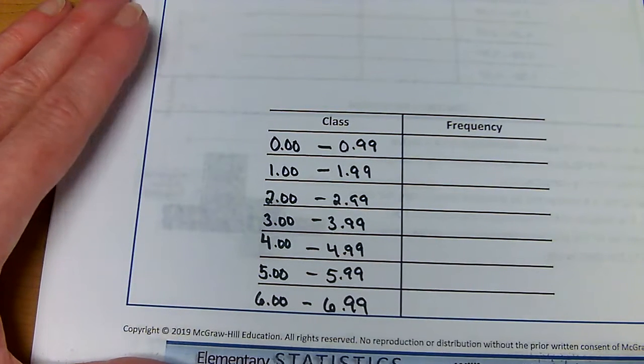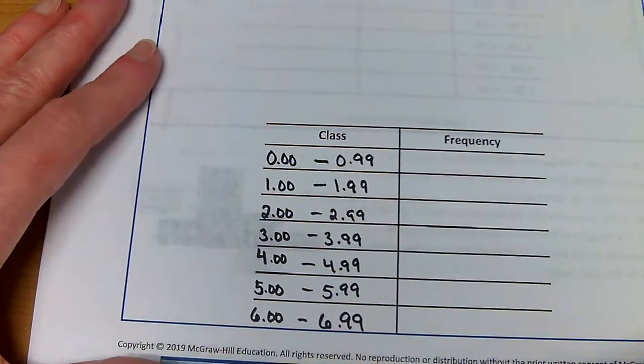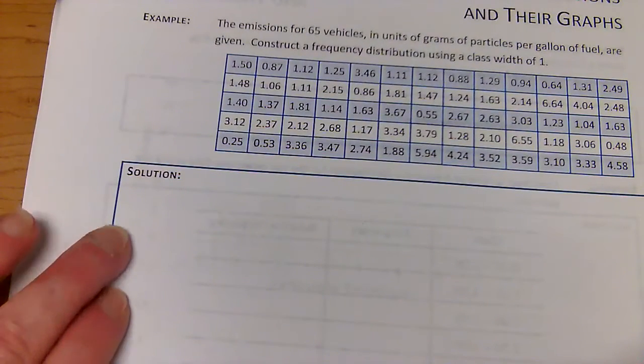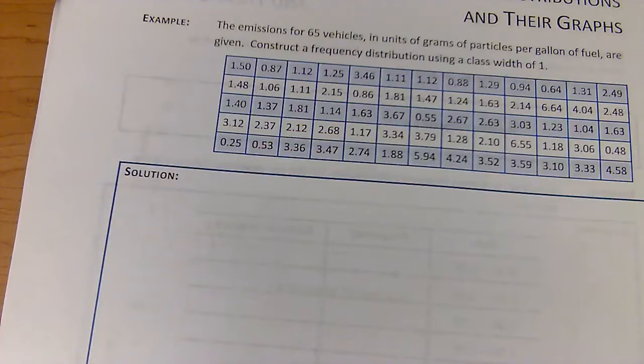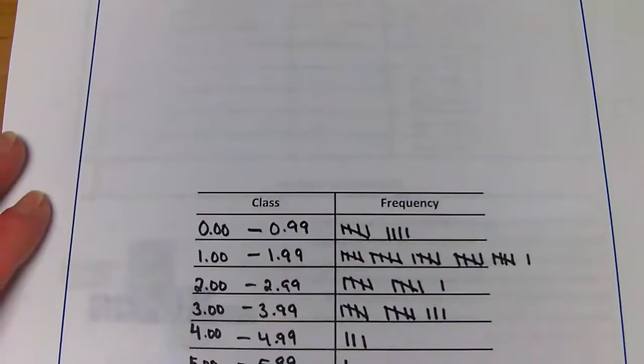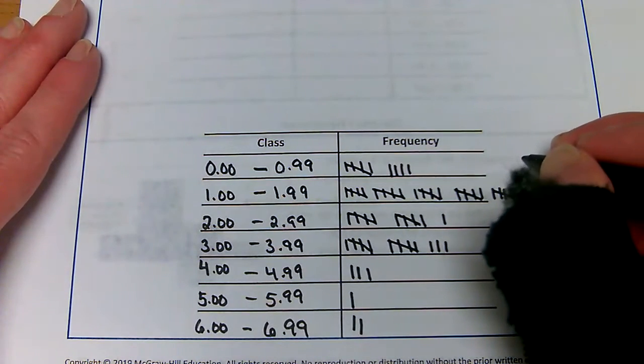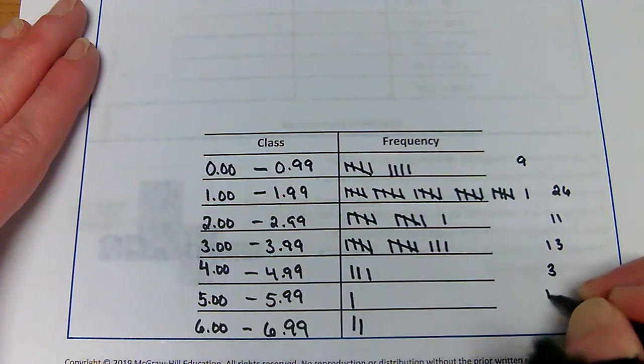Now we want to find our frequencies. I'm going to speed this along and let you take a moment and go through and fill in your frequency distribution. If you didn't already pause the video, count them up. When you're done you should have a frequency chart that looks something like this: we have 9 here, 26 here, 11, 13, 3, 1, and 2.